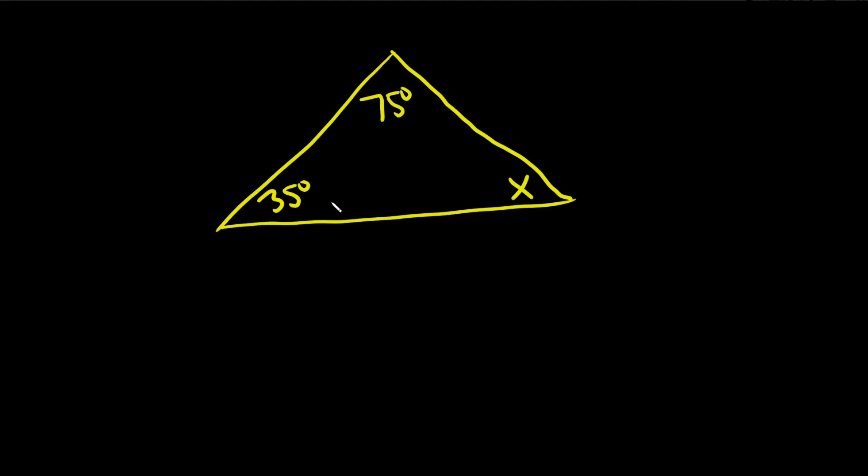So we have two other angles that are given. And so the key is, in a triangle, all of the interior angles inside the triangle add to 180 degrees.